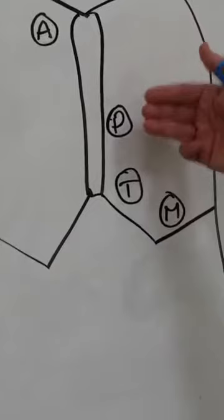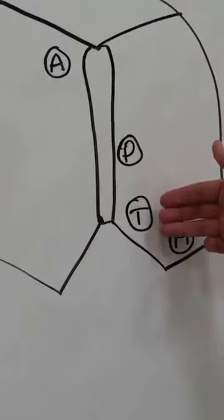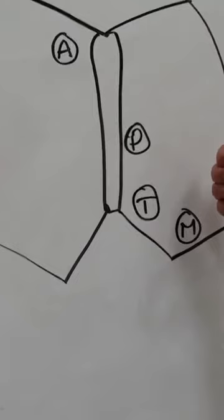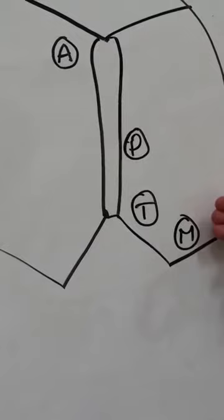We then move to the tricuspid listening post which is at the fifth intercostal space just to the left of the sternum. Finishing off our diaphragm examination with the mitral valve listening post, which is at the fifth intercostal space mid-clavicular line.